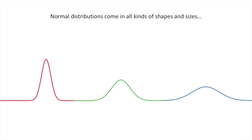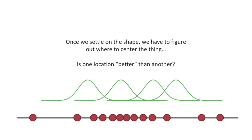Normal distributions come in all kinds of shapes and sizes. They can be skinny, medium, or large boned. Once we settle on the shape, we have to figure out where to center the thing. Is one location better than another?